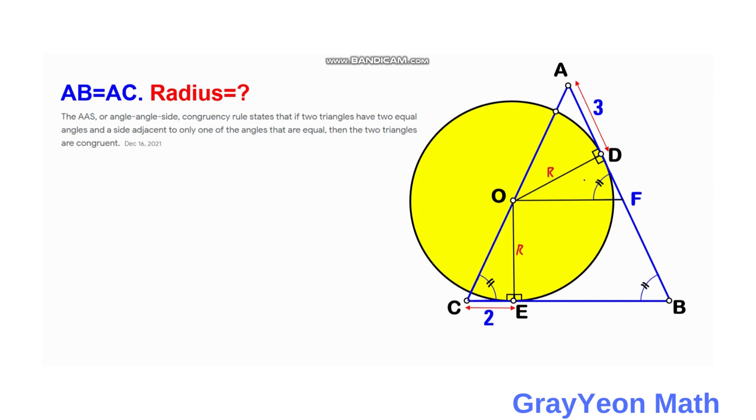Notice that these two triangles have their corresponding angles—angle F and angle C are congruent, and the 90 degree angle at E for OEC and D for ODF. They both have angles that are consecutive, and there is a side adjacent to only one of the angles which is equal, and that is the radius.